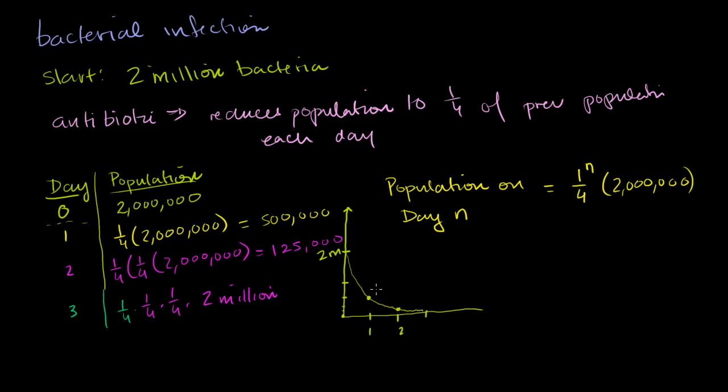So you see the population of our bacteria really goes down very quickly. It never gets quite to 0. We're always going to have some bacteria. Well, eventually you're going to have one bacteria and it's going to have a one-fourth chance of hitting it. So maybe eventually you'll get to 0. But it slowly gets to 0, though the absolute number decreases very, very fast.